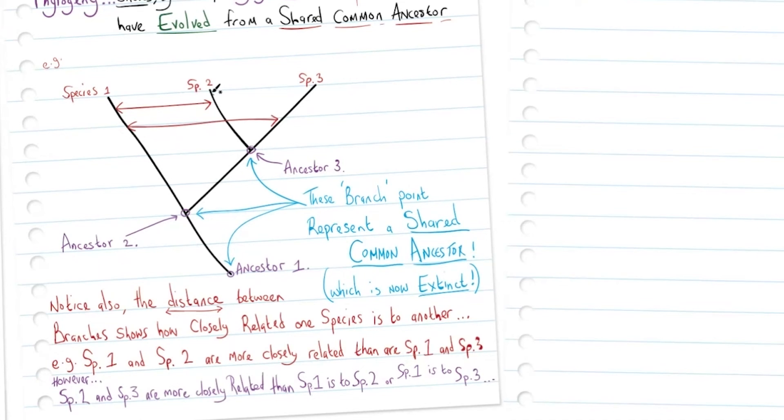If we look at the arrows showing the distances between these branches, we can see that species 2 and species 3 are more closely related than either species 1 is to 2 or species 1 is to 3.